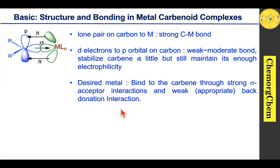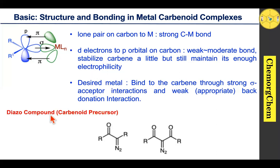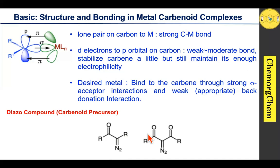Copper and rhodium are two examples well suited for the generation of metal carbene complexes. Diazo compounds are highly useful for preparing metal carbene complexes. The diazo compound can have either electron-withdrawing groups or electron-releasing groups, and their reactivity mostly depends on what groups are present in the framework. If you have an electron-withdrawing group, those types of diazo compounds are of highly reactive nature.